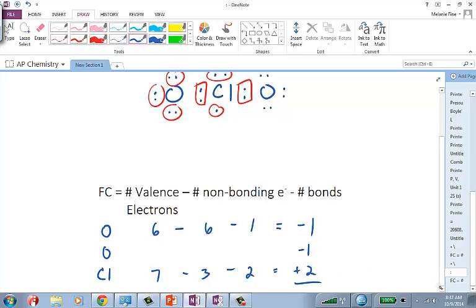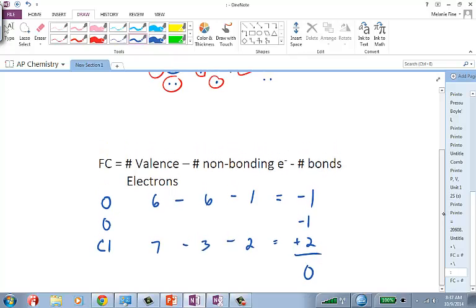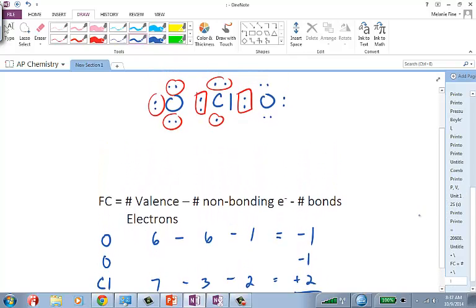So overall, we have a formal charge of zero, which is what we want, but we really want the individual formal charges to be as close to zero as possible. It is good that oxygen is more negative than chlorine because oxygen is the more electronegative atom. But this doesn't look to be the ideal Lewis dot structure.